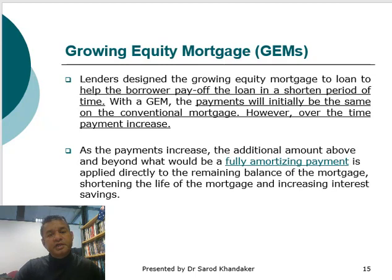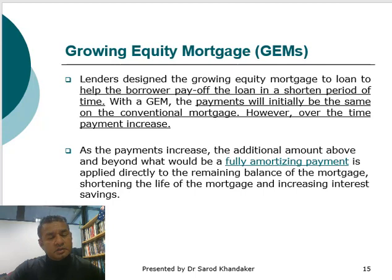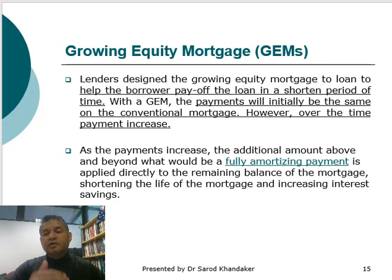The next option is called the Growing Equity Mortgage (GEMS). In GEMS, the payment amount grows gradually so that equity builds up and the mortgage is paid off before the actual end date. The payment increases gradually, and the additional amount beyond the fully amortized payment goes directly to the principal. This way the homeowner can save a lot on interest payments and repay the mortgage considerably earlier than in a standard situation.